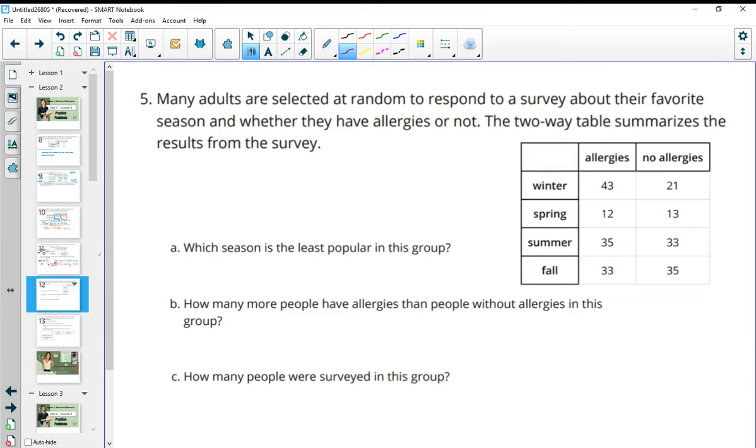Number five, many adults are selected at random to respond to a survey about their favorite season and whether they have allergies or not. The two-way table summarizes the results from the survey. Which season is least popular in this group? So the least amount of people choose it. If we add these together, we get 64 people for winter, 25 people for spring, 68 people for summer, and 68 people for fall. So least popular is spring.